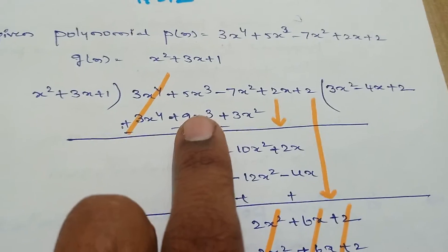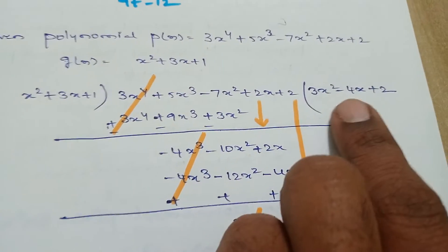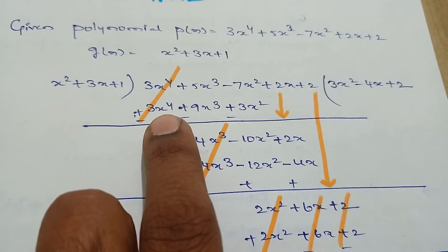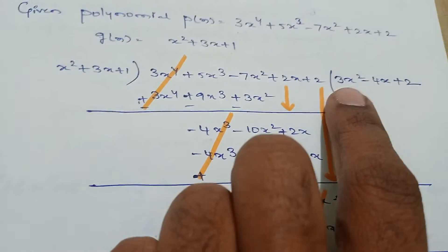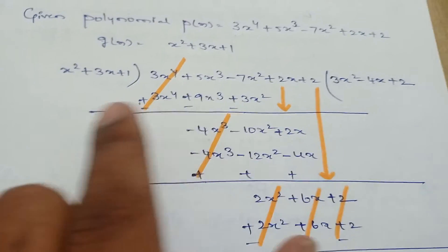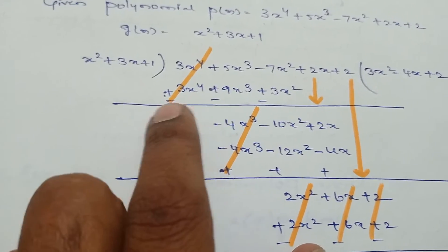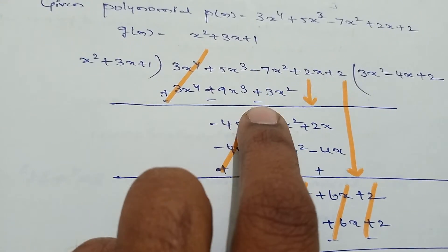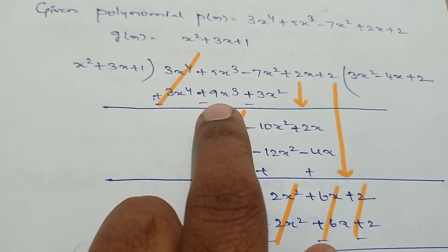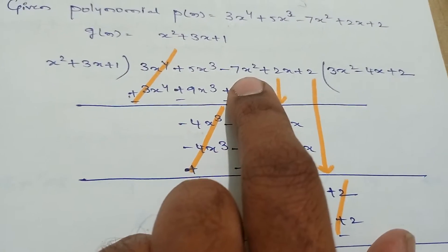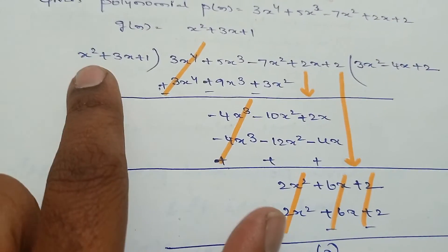Take g(x) as the divisor and p(x) as the dividend. For x², what we should multiply to become 3x⁴? x² into 3x² = 3x⁴. 3x into 3x² = 9x³, and 1 into 3x² = 3x². Now by doing subtraction the signs will be different: plus becomes minus. 3x⁴ gets cancelled. -9x³ + 5x³ = -4x³, and -7x² - 3x² = -10x². Take the third term, 2x.